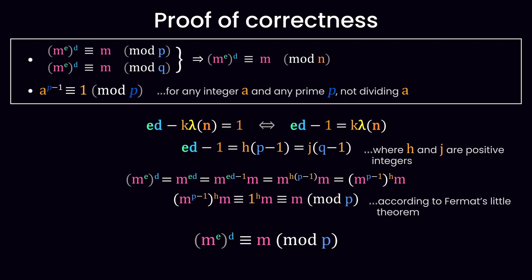We can repeat practically the same proof for q, with the only difference being that we have to replace h by j, but its value doesn't make a difference. By proving it works modulo p and q, we have proven that it works modulo n, which means we're done. Mathematically, if we generate n, e and d using the rules we saw earlier, the RSA equation will always work.